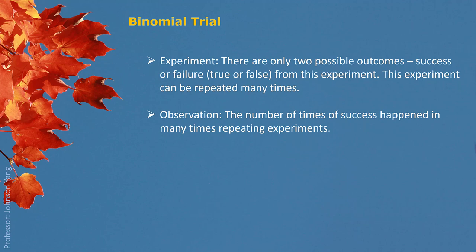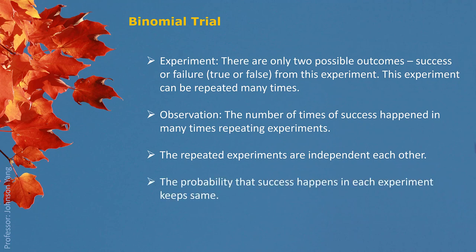For this kind of experiment, we observe the number of times success happened in many repeated experiments. The repeated experiments are independent, under the same circumstances. The probability that success happens in each experiment stays the same. These are our basic assumptions. With all these features, this kind of experiment is called a binomial trial or binomial experiment.